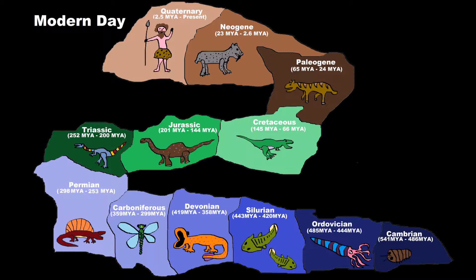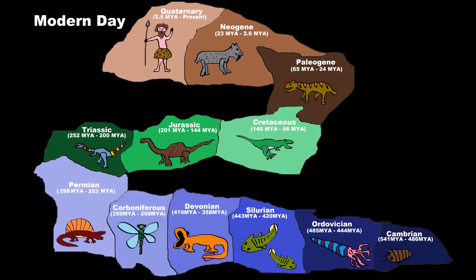Let's first ask ourselves this question: how old is the Earth? The Earth is about 4.5 billion years old. Billion, folks — that's 1,000 million, and we got 4,000 of them.